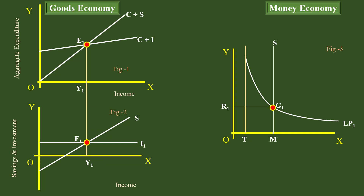At the existing level of interest, the business community increases investment. The investment curve I1 is shifted to I2. The new investment curve cuts the savings curve at F2, and the new equilibrium income is Y2. The increase in investment shifts the aggregate demand curve upwards — the new aggregate demand curve is C plus I1. It cuts the aggregate supply curve at E2, and the equilibrium income is Y2.